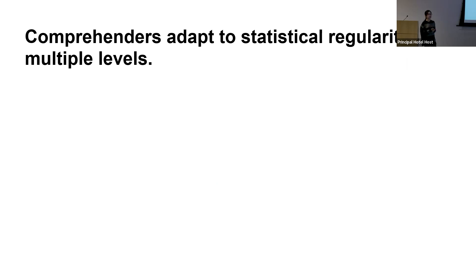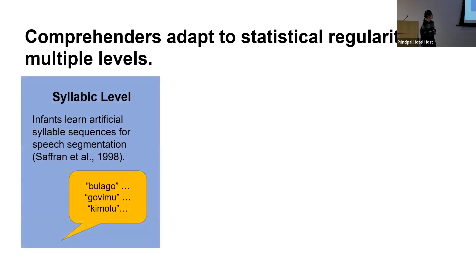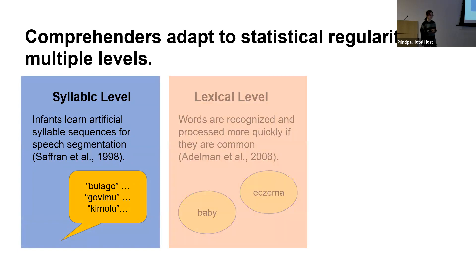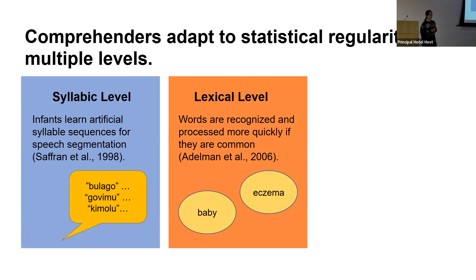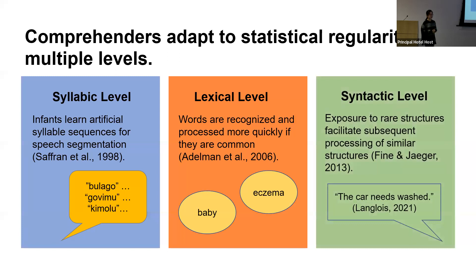It's well established that comprehenders adapt to statistical regularities at multiple levels of language. At the syllabic level, infants learn about artificial syllable sequences and use them for future speech segmentation. At the lexical level, high-frequency words are usually recognized and processed more quickly than low-frequency words. At the syntactic level, the processing of difficult structures can be facilitated through repeated exposure to similar structures.